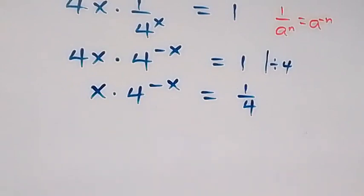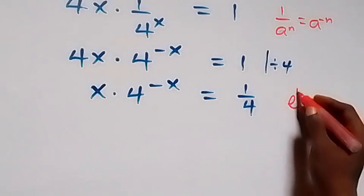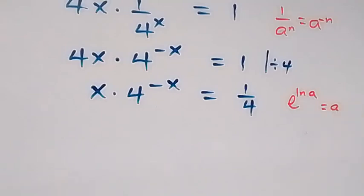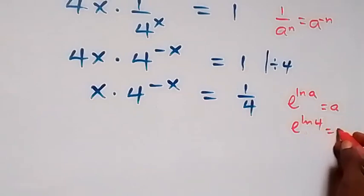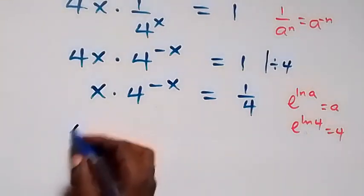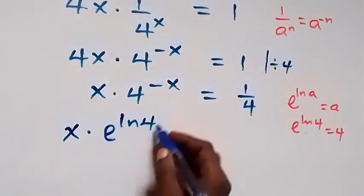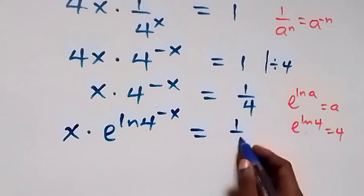Here, we can write 4. From what we have, we know that e raised to power ln(a) is the same as a. So this implies that we can write 4 here as e raised to power ln(4). That will give us 4. So that means here we have x times e raised to power ln(4).